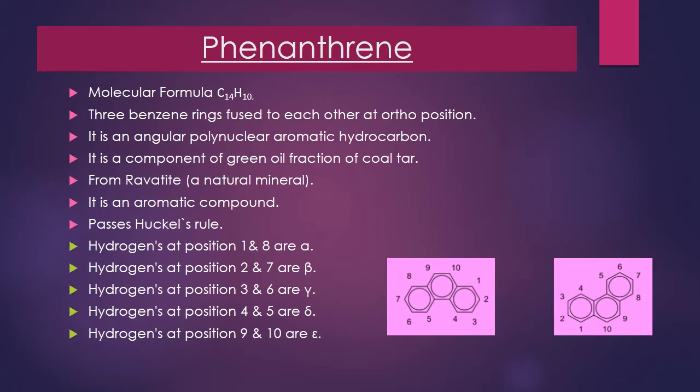The hydrogens at positions 1 and 8 are identical and are alpha hydrogens. At positions 2 and 7 are identical beta hydrogens. At positions 3 and 6 are identical gamma hydrogens. At positions 4 and 5 are identical delta hydrogens. And at positions 9 and 10 are identical epsilon hydrogens.